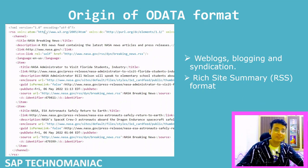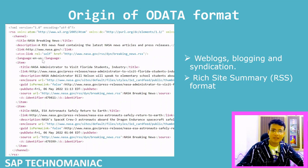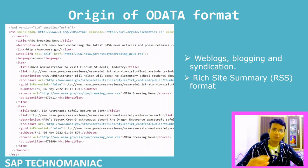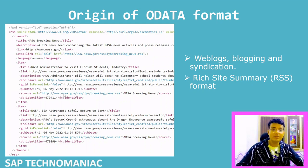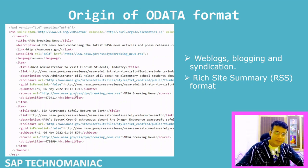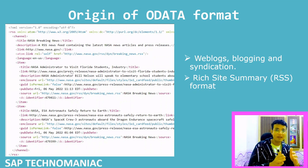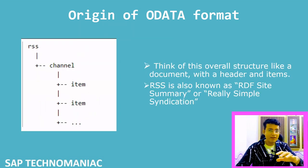In the RSS format, there is one root node called RSS. Inside that, we have a header node called channel. Inside the channel header node, we have information like title, core information, descriptions, and links — so header information is there. Then we have line item data like item one and item two, where we can see actual news. Latest news is displayed first, and all of this is in XML format.